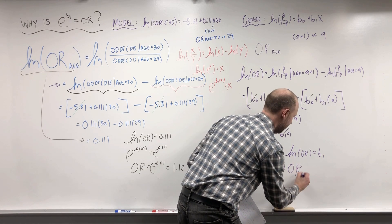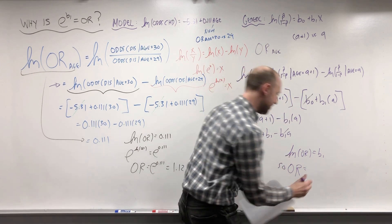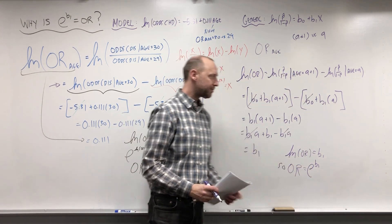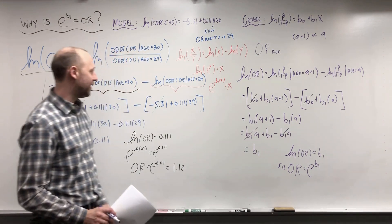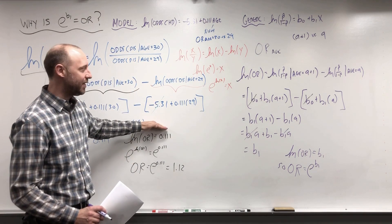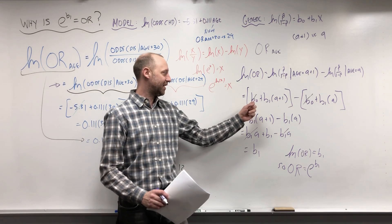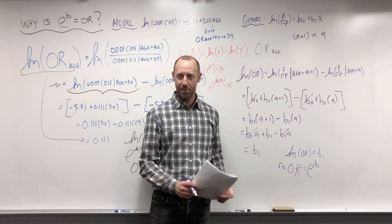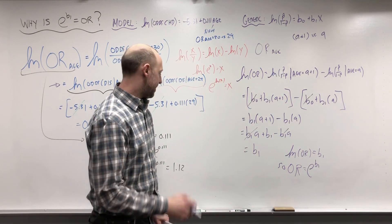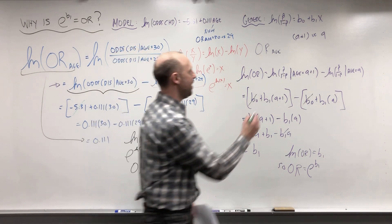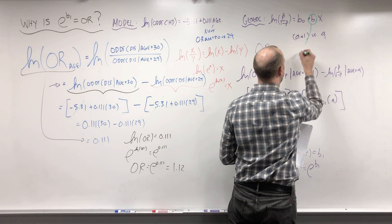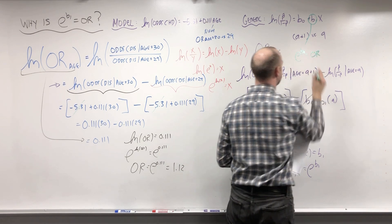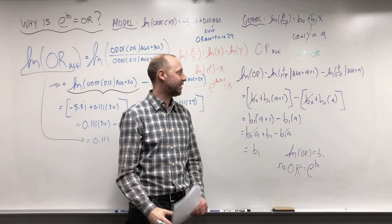So the odds ratio, if we exponentiate each side, is e to the B1. This completely parallels what we did with numeric values, just generalized using B0 and B1 and ages A and A plus 1. This gives us the understanding of why exponentiating the coefficients from a logistic regression model gives us the odds ratio. Exponentiating B1, B2, B3, and so on gives us odds ratios.